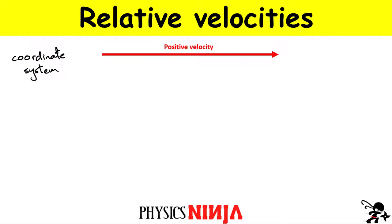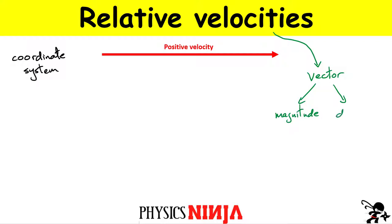First, let's consider some basics about relative velocities. Velocity is a vector quantity, which means it has to be defined using two terms. One term is the magnitude — how big or how fast it's moving. But the other term, which is really important, is the direction.